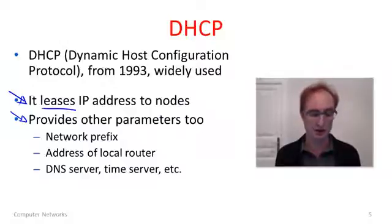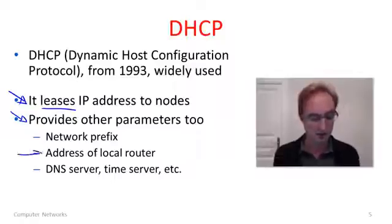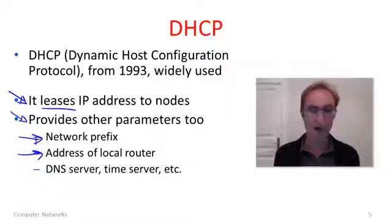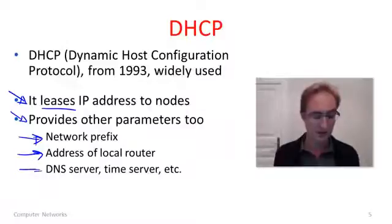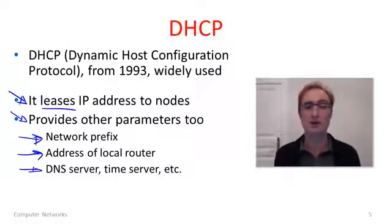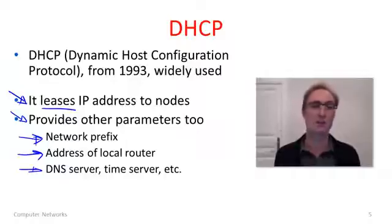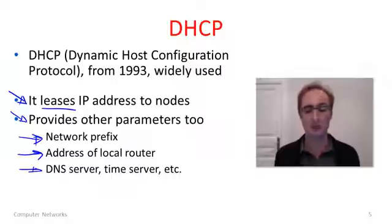DHCP provides not only an IP address but other things you'd need to use the network. For instance, the IP address of your local router, the network prefix you're on so you can decide whether you're sending to a local or remote host, as well as other information such as a time server to set your clock and a DNS server to translate host names like www.cs.washington.edu into an IP address.